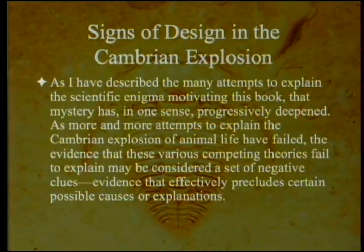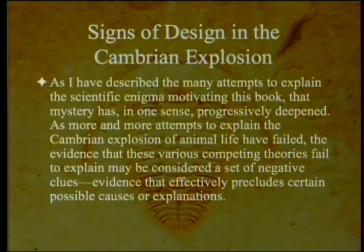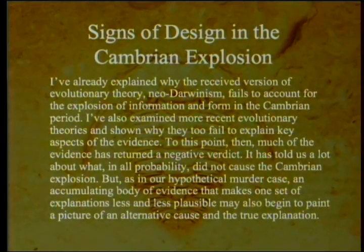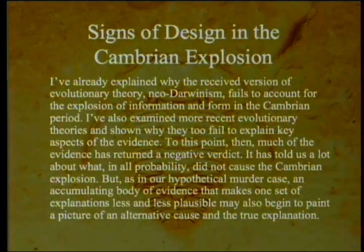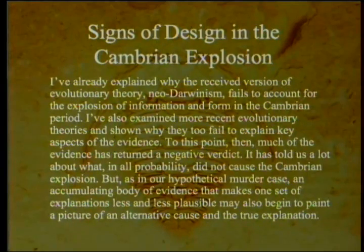As I have described in many attempts to explain the scientific enigma motivating this book, that mystery has progressively deepened. As more and more attempts to explain the Cambrian explosion of animal life have failed, the evidence these various competing theories failed to explain may be considered a set of negative clues — evidence that effectively precludes certain possible causes. I have already explained why neo-Darwinism fails to account for the explosion of information and form in the Cambrian period, and I have shown why more recent evolutionary theories also fail to explain key aspects of the evidence.